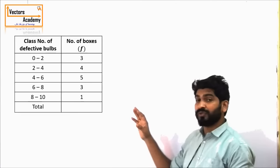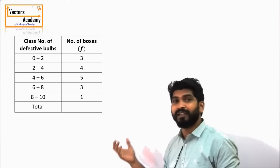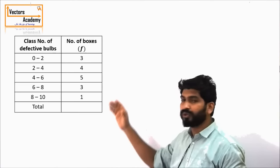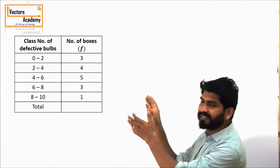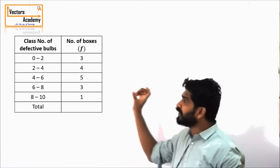What we have to do is find the average number of defective bulbs in each of the boxes. The number of defective bulbs ranges from 0 to 10, so the average should lie between 0 and 10. In this question, we have been given a class interval — there is not a specific value, it is a range. So for this we need to calculate the class mark.